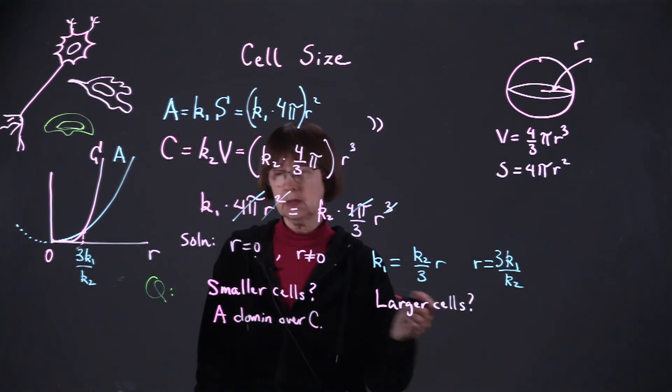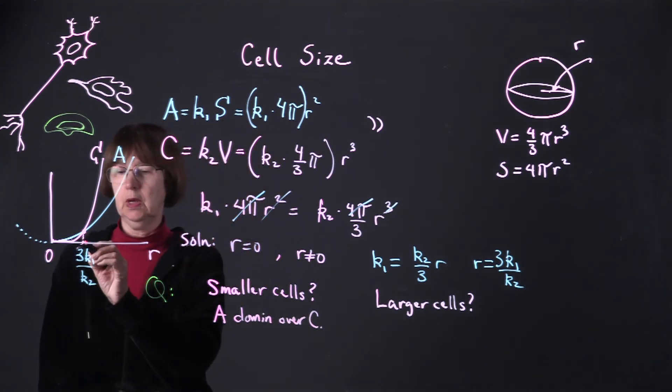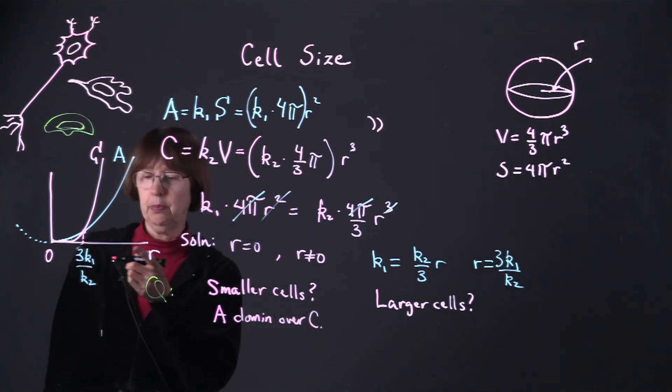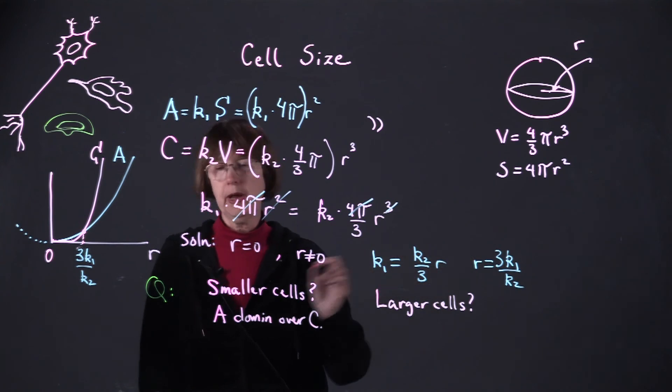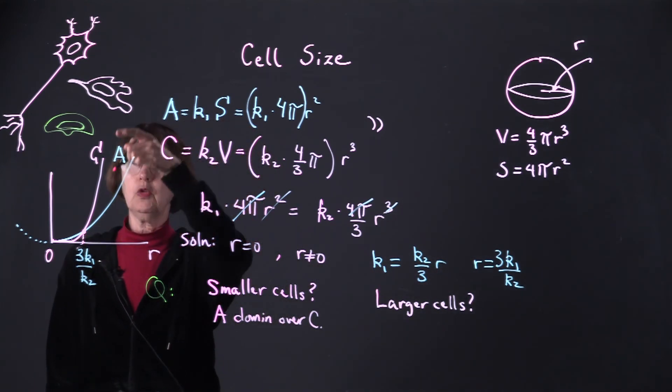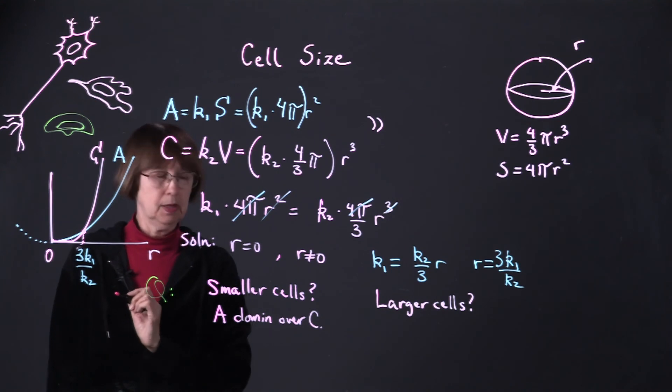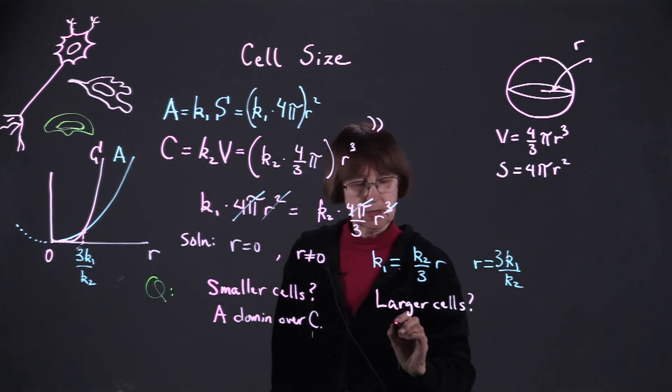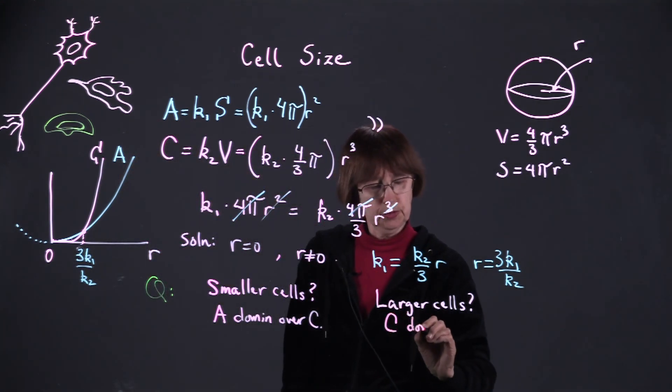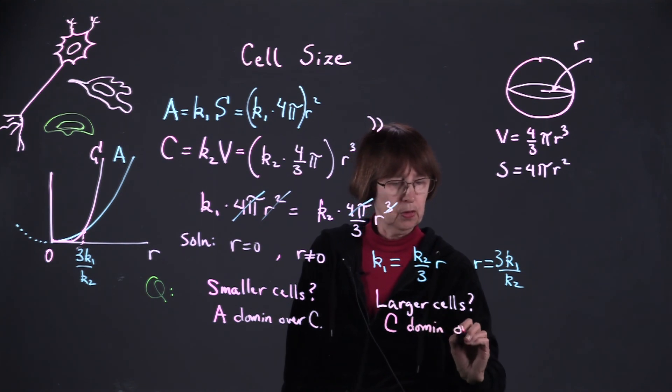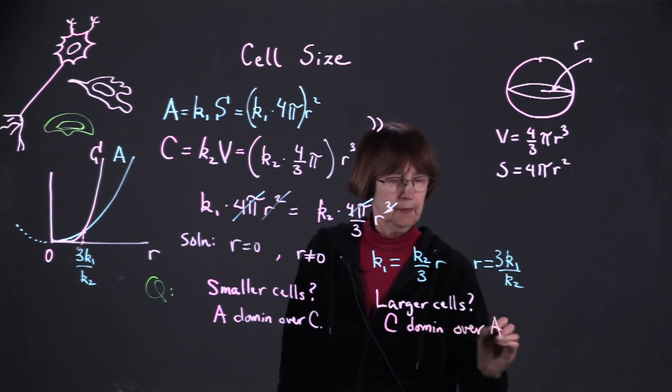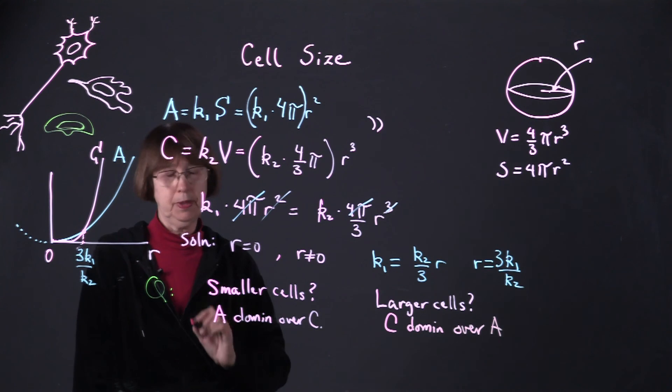What about larger cells? Well, the opposite is true. For larger cells, for cells that are bigger than this critical radius, the consumption curve will be much higher. Notice how it very steeply increases, and therefore, the consumption will dominate over the absorption. These poor cells will not be able to keep up with their nutrient needs.